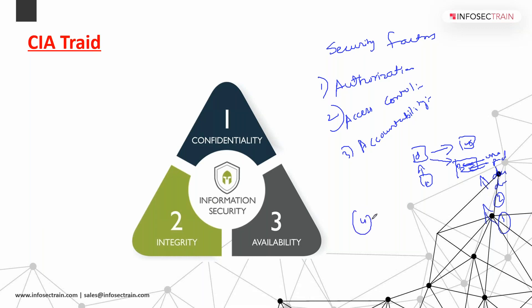Next we have auditing, also called accounting. Someone is monitoring your network, tracking and keeping all records of system activity. The process of recording system activity is known as accounting or auditing. These are your four security factors maintaining your CIA Triad.